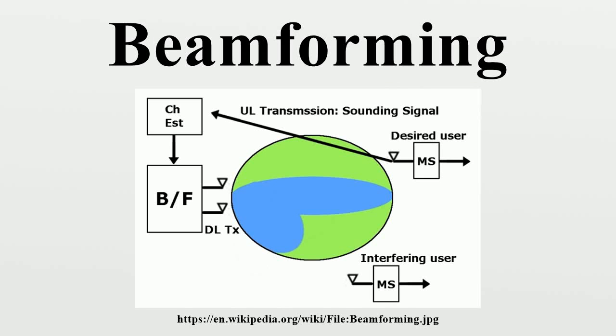Beamforming or spatial filtering is a signal processing technique used in sensor arrays for directional signal transmission or reception. This is achieved by combining elements in a phased array in such a way that signals at particular angles experience constructive interference while others experience destructive interference.